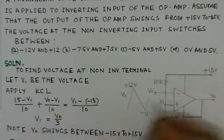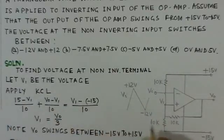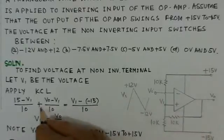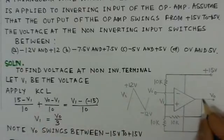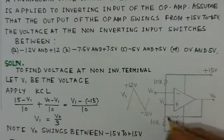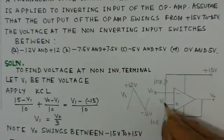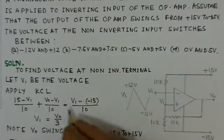15 minus V1 over 10k, then plus the current from V0 minus V1, this is V1 over 10k equals to